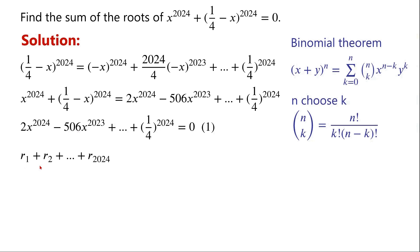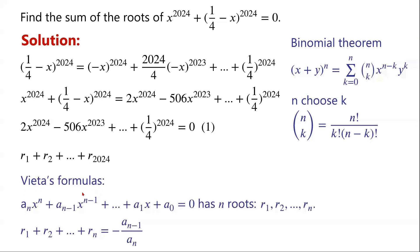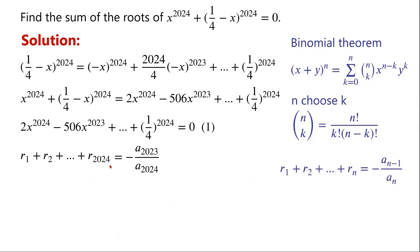We want to find the sum of these roots. By Vieta's formulas, a polynomial equation of degree n has roots r1, r2, and so on through rn. The sum of these roots equals minus a_(n-1) over a_n.